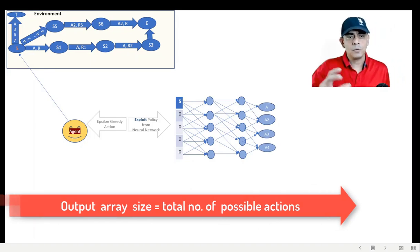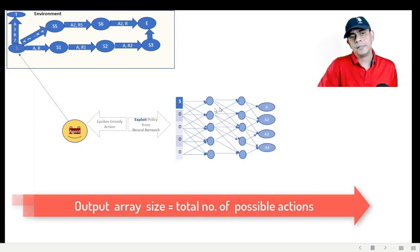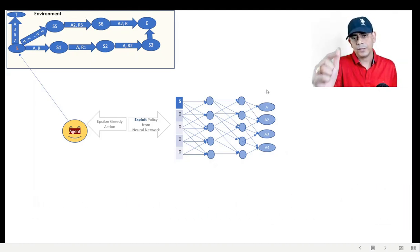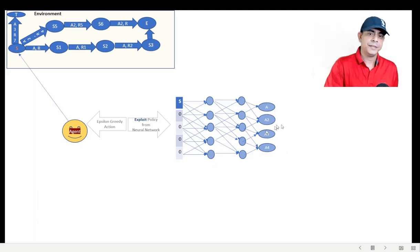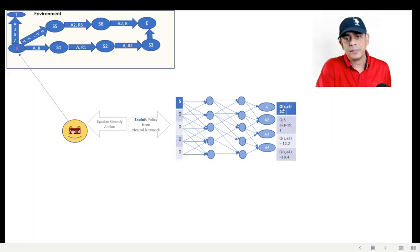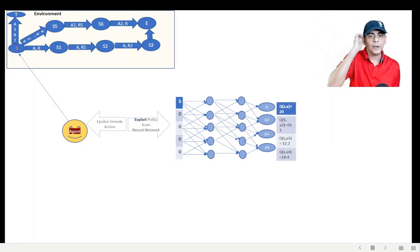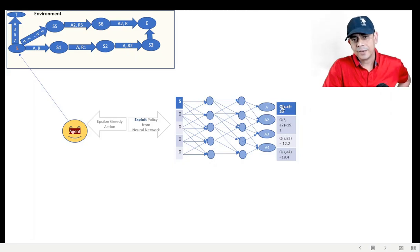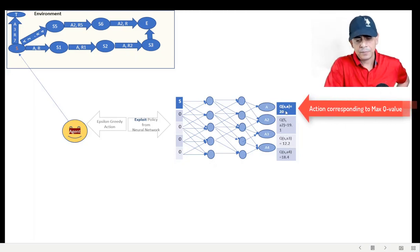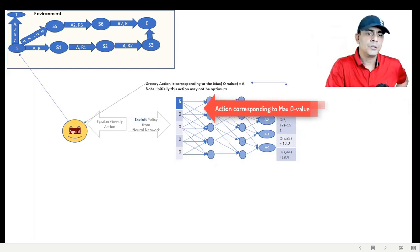The output is the length of the output array, which is nothing but all the actions which are possible. The index positions would be representing the action, whereas the value would be the Q-value for that state-action pair which the neural network had learned earlier. In our case, we can see that the Q-value for action A is the maximum, and that's what would be returned to the agent.